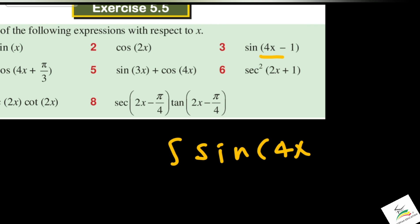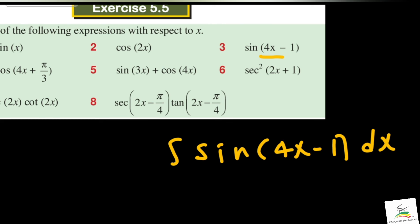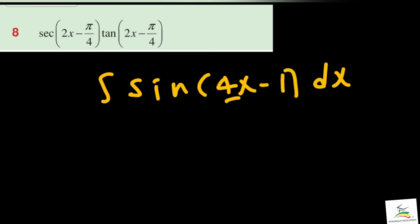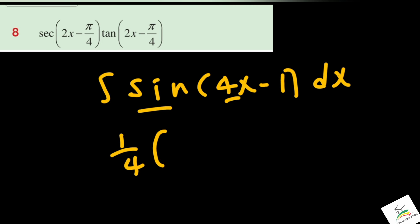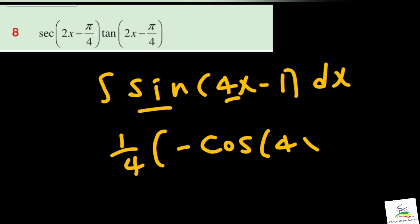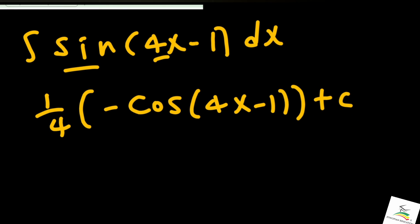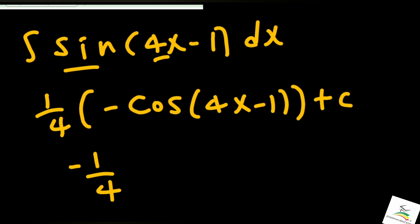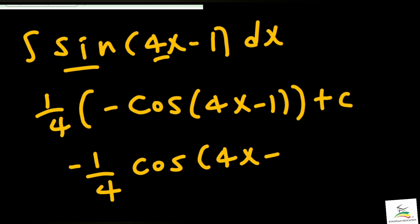Integration of sin(4x − 1) with respect to x: the x coefficient is 4, not 2, so 1 over 4 — sin integrates to negative cos — giving negative cos(4x − 1) plus C. That is negative (1/4) cos(4x − 1) plus C.